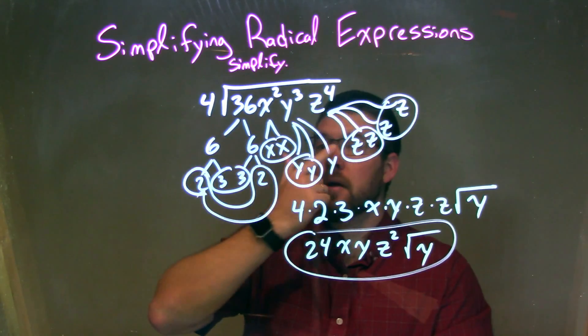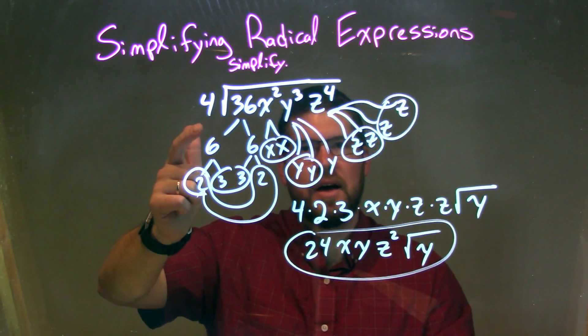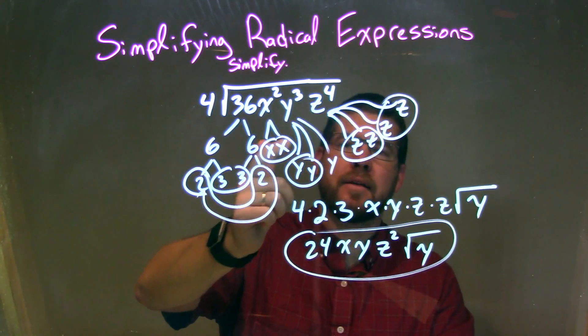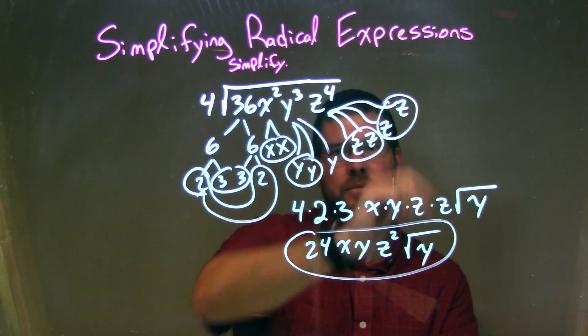So let's recap. We're given 4 times the square root of 36x squared, y to the third, z to the fourth. That breaks down to be 2 times 3 times 3 times 2 times x times x times y times y times y times z times z times z times z.